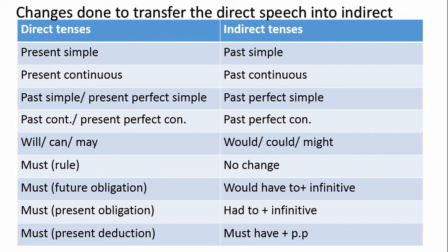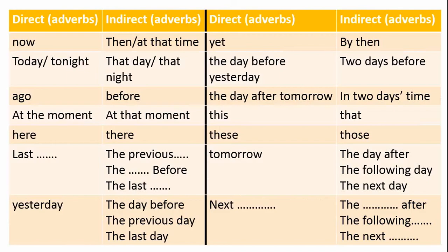For 'must' as present deduction, we give an example: 'He said, it must be so hard for you to train every day.' When we change this deduction form, we say: 'He said that it must have been so hard for you to train every day.' Secondly, we have the table of changes that happen to adverbs and demonstrative pronouns.